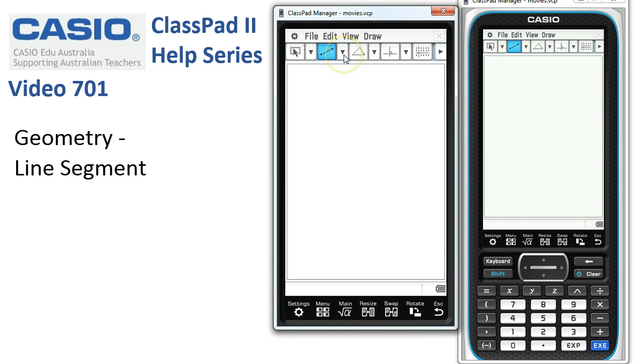So probably the first method was the easiest then. Now to actually draw a line on the ClassPad screen, we tap once for one end of the line and tap a second time for the other end.